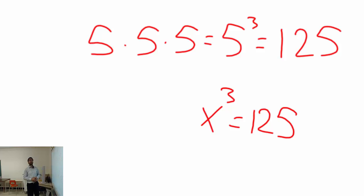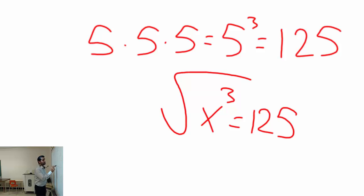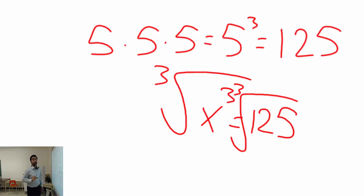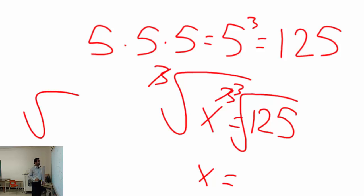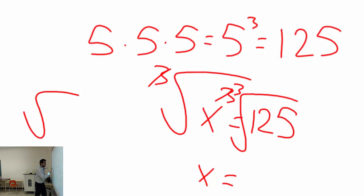To solve x cubed equals 125, you need to take the cube root of both sides — not the square root. Taking the cube root cancels out the exponent, leaving x alone. So x equals the cube root of 125. Remember, the square root has no index number, but the cube root has a 3.